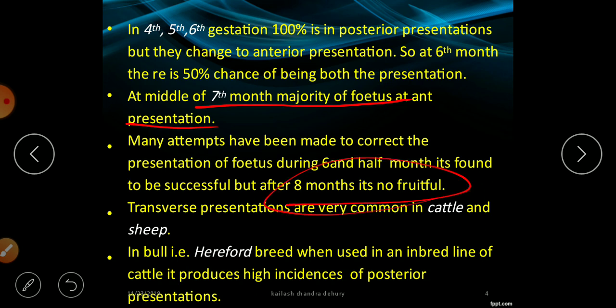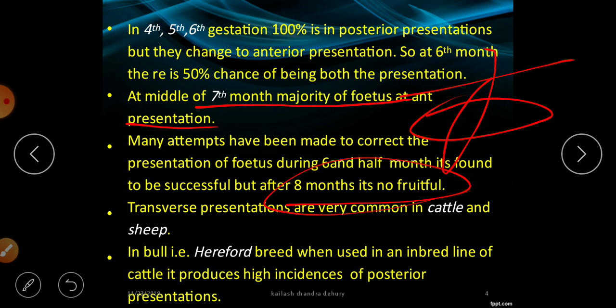Transverse presentation is very common in cattle and sheep. This is where the long axis of the fetus is at 90 degrees to the long axis of the uterus. We have to rectify by turning the animal to anterior presentation according to the convenience of the gynecologist. When Hereford bulls are used in inward line crossing of cattle, it produces a high incidence of posterior presentation.